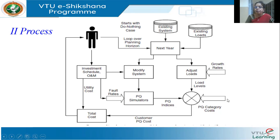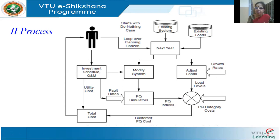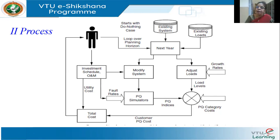Then I add the power quality costs, and using the system I simulate the whole system and find out what are the power quality issues. I know the load, I know the system, I simulate it — I can come to know what harmonics are there, whether there's going to be a voltage sag, etc. Using power quality indices, if some indices are violated, I calculate what is the total customer power quality cost — what does it cost the customer to keep the power quality within the standard admissible limits.